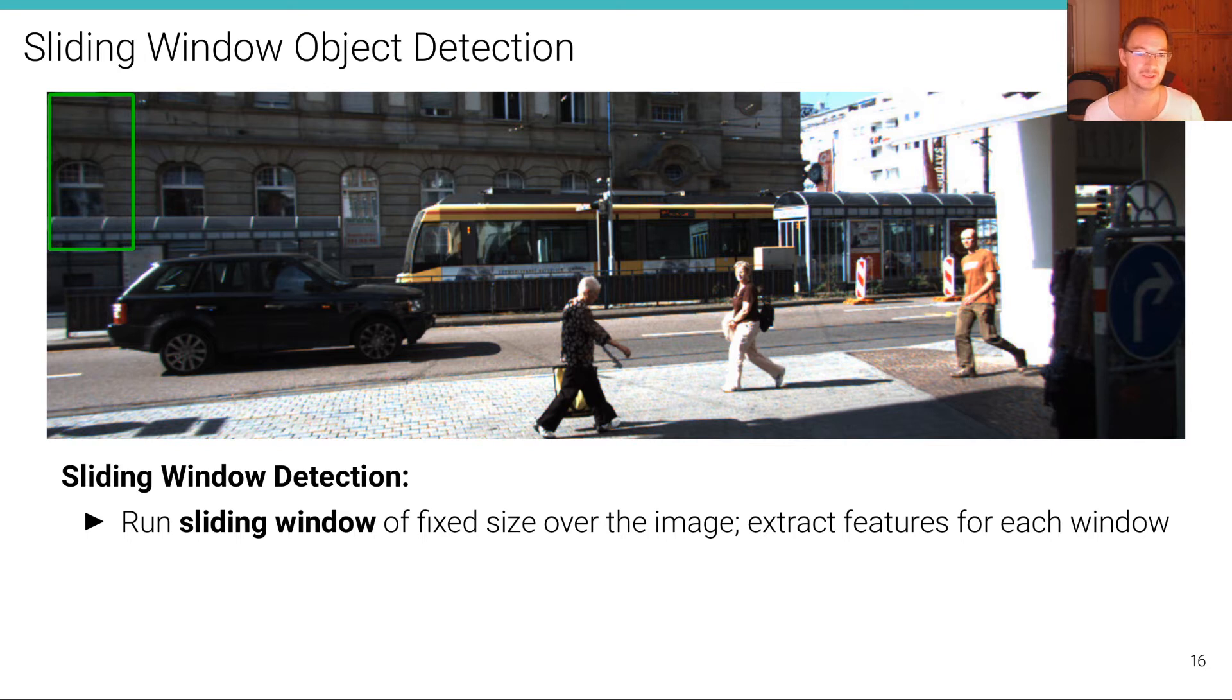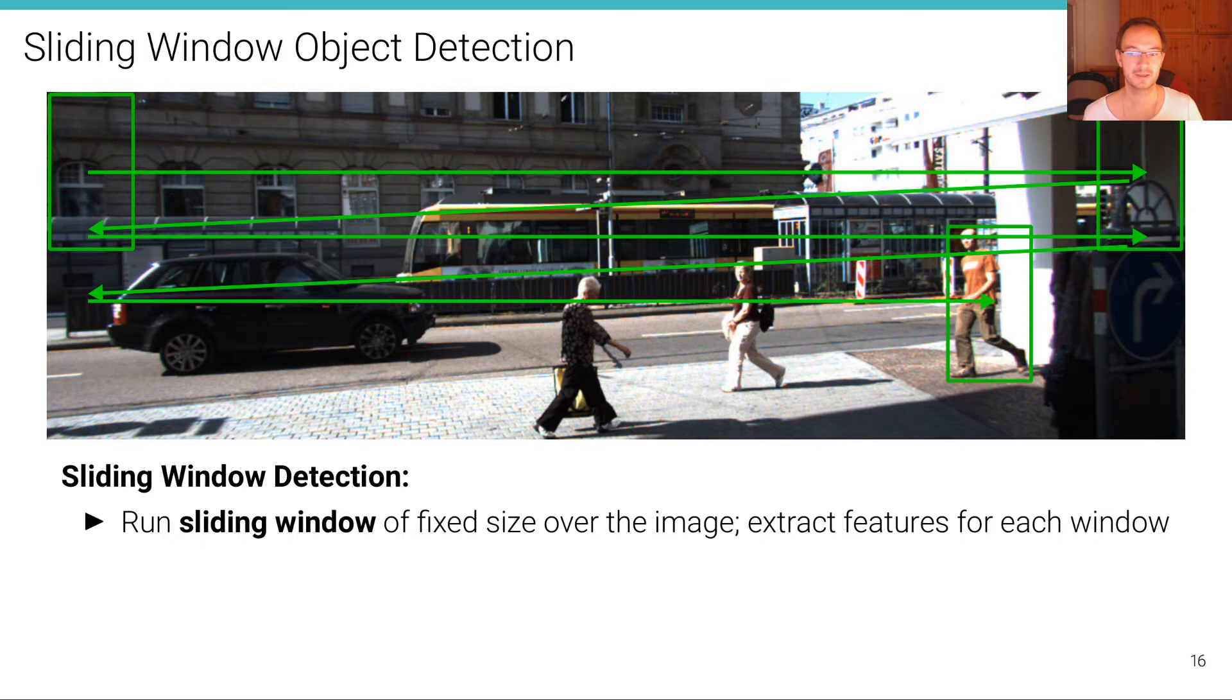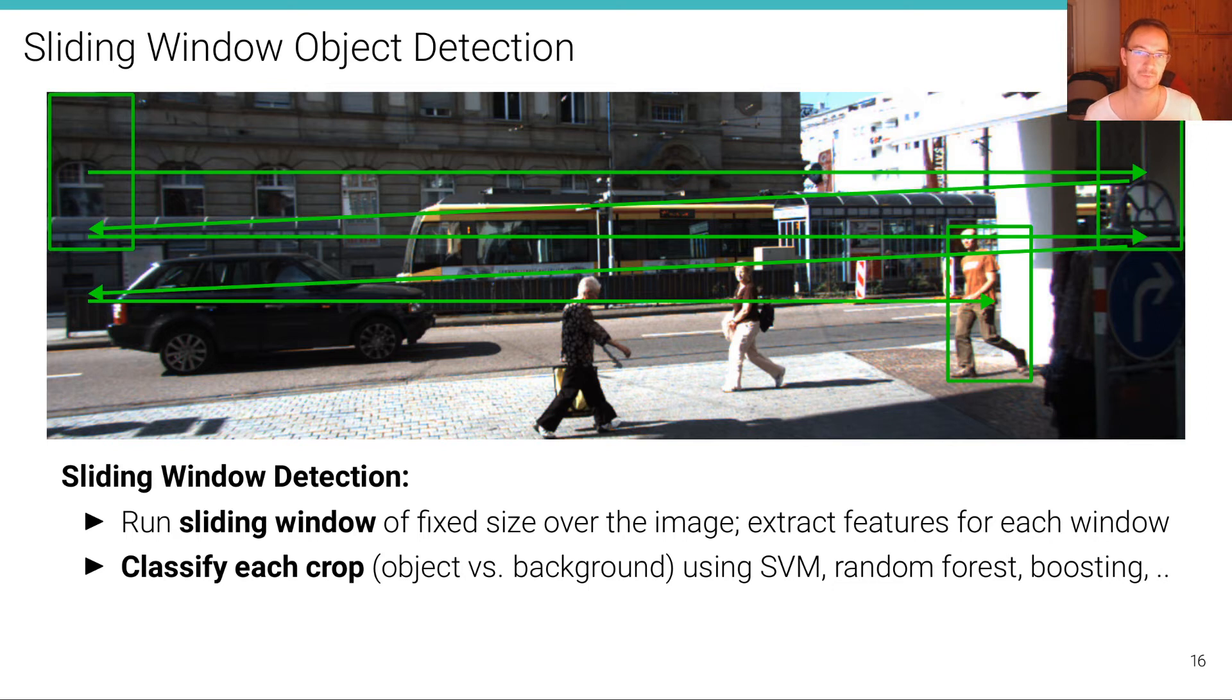Sliding window object detection works as follows. We run a sliding window of fixed size, indicated in green here, over the image, and extract features for each of these windows or crops. Then we classify each window using a binary classification objective, object versus background, for example pedestrian versus anything else, using a standard classification model based on these features that we have extracted from that window.